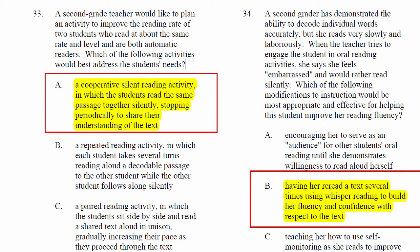We know we're dealing with a teacher who wants to help two second-grade students improve their reading rate — their speed. We're dealing with two students, so let's look at A: a cooperative silent reading activity in which the students read the same passage together silently, stopping periodically to share their understanding of the text. What does natural reading look like? Typically it's somebody sitting down reading something silently and then thinking about it — like reading with a friend at a cafe and then stopping to share. A is your best bet for this test. What you're trying to do is take these automatic readers and move closer to real context, and A satisfies that.